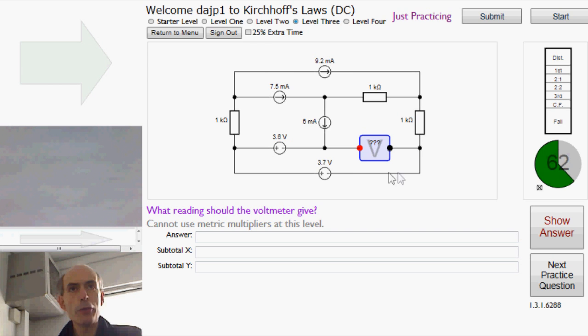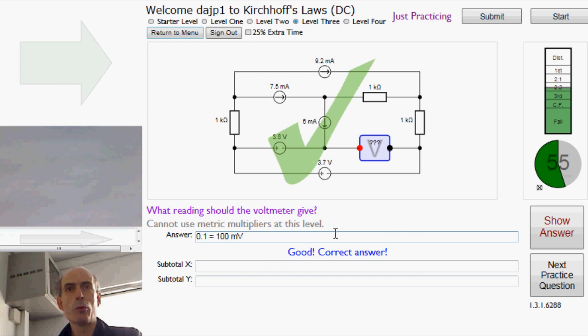We just go this way, up 3.7 volts, and then this way, down 3.6 volts. So the net result would be just 0.1 volts, or 100 millivolts. They're not all that easy.